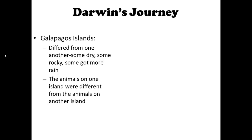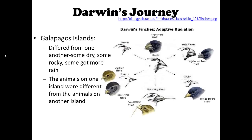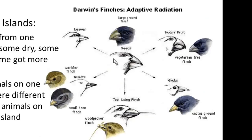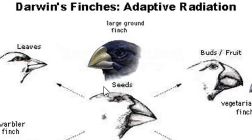The animals on one island were different from the animals on another island. For example, these are Darwin's finches. He observed these birds called finches and noticed they were different. There were different finches on different islands — although they were the same species, they looked different. He looked at their beaks, and depending on which island they were on and which food they ate, their beaks looked different.